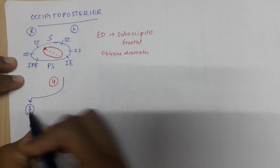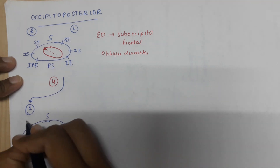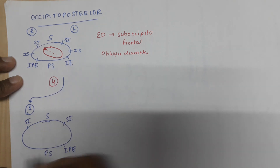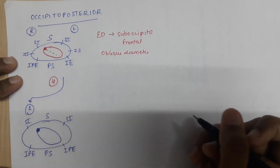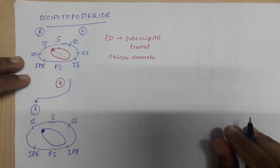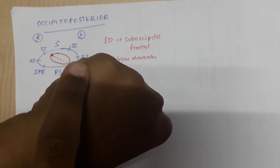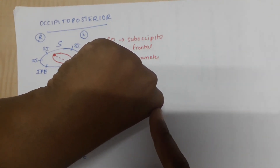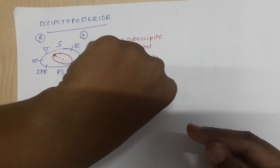The first possibility: in a well-flexed head, if this is the occiput and this is the sinciput, the occiput will hit the pelvic floor first before the sinciput. The principle here is that whichever part hits the pelvic floor first has to rotate such that it comes to lie behind the pubic symphysis.